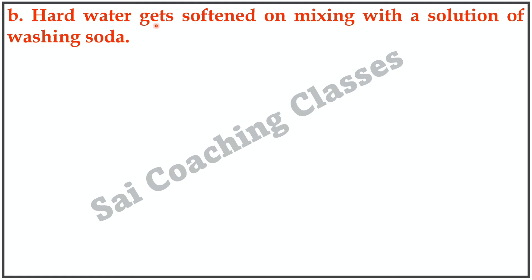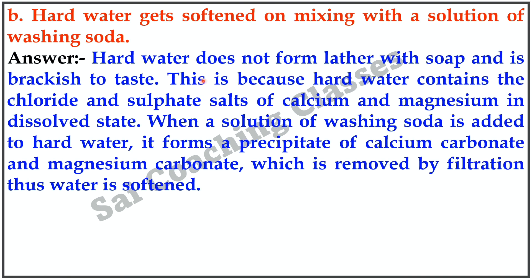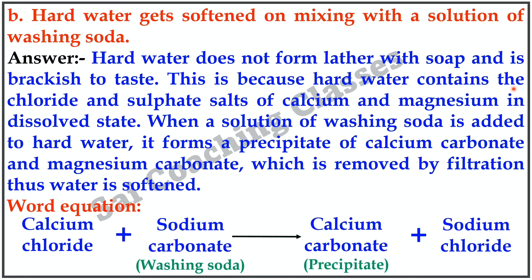B. Hard water gets softened on mixing with a solution of washing soda. Answer: Hard water does not form lather with soap and is brackish to taste because it contains chloride and sulfate salts of calcium and magnesium in dissolved state. When washing soda solution is added, it forms a precipitate of calcium carbonate and magnesium carbonate, which is removed by filtration, giving softened water. Word equation: Calcium chloride + Sodium carbonate (washing soda) → Calcium carbonate (precipitate) + Sodium chloride.